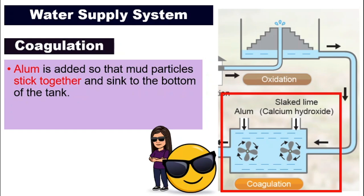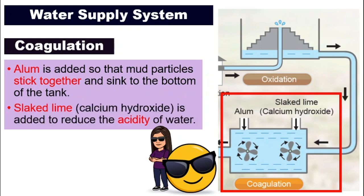The second thing that we add into this water will be slaked lime. The chemical name will be calcium hydroxide. It is a form of alkali. This is added to the water to reduce the acidity of the water.